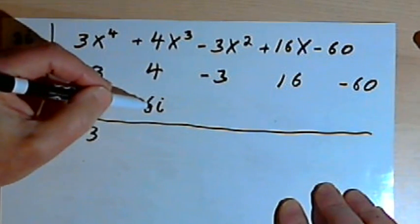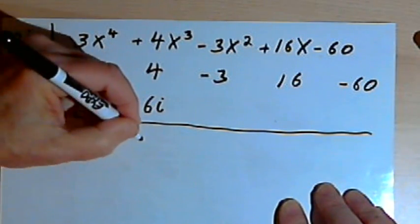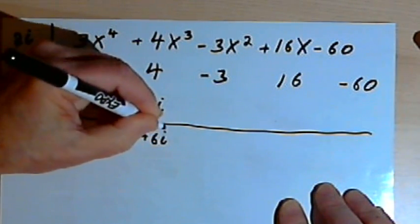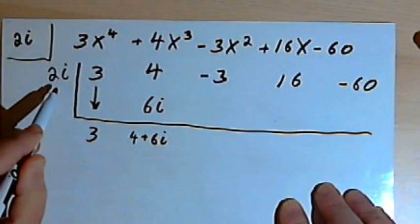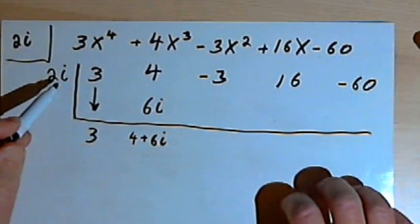And then we add the numbers in the next column together. We've got 4 plus 6i. So I have to write that as just 4 plus 6i. And then I multiply. I've got 2i times 4 plus 6i.